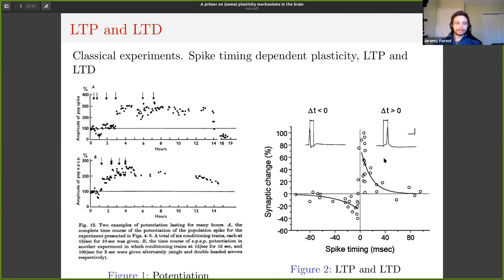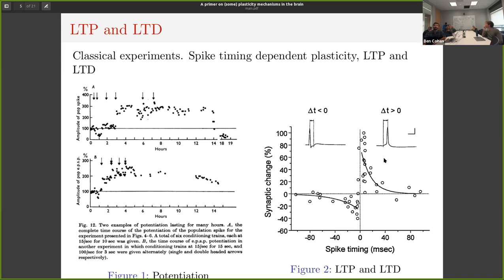We're looking at single action potentials arriving at the synapse — what happens, how much neurotransmitter is released. The STDP graph is also interesting because nothing like that ever happens in deep learning, because there's no spike timing in deep learning. Everything is synchronous, and so the concept of something arriving before something else doesn't really occur this way in deep learning.